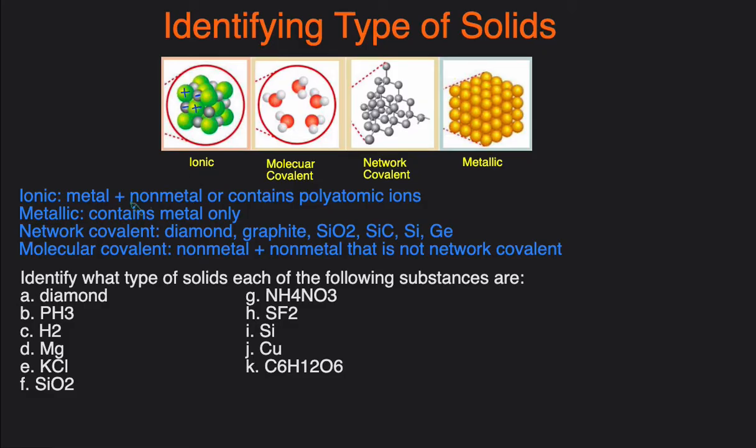So the four types of solids are ionic, metallic, network covalent, and molecular covalent. We'll go over the categories and the criteria for each, and then we'll go over the examples where we identify the type of solids each of these substances are.